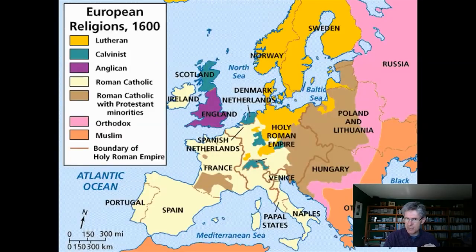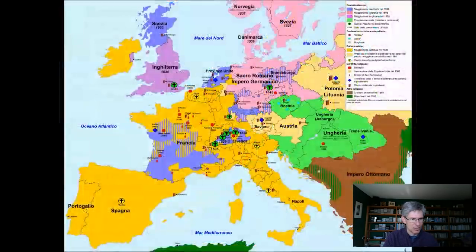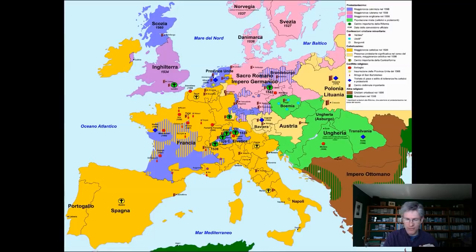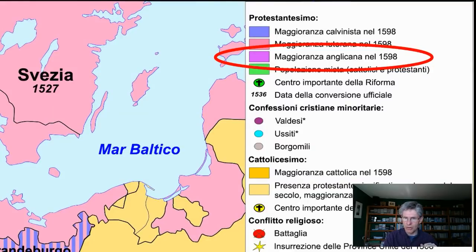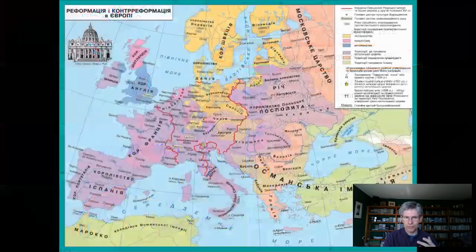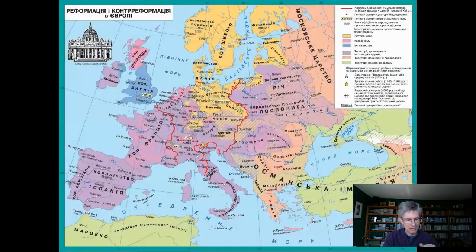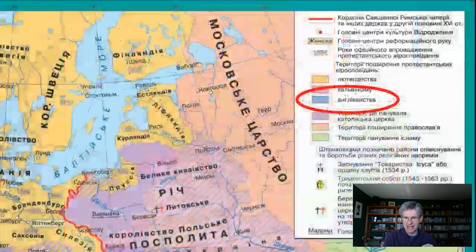And this isn't just a peculiarity of maps produced by English scholars for the English market. You might think that the Italians wouldn't have a dog in this fight in these intra-Protestant definitional quarrels. And it's true that the colour of England is more subtly different there, but the key plainly indicates that in 1598 England is majority Anglican. Even the Russians mark England out as special and describe its people as Anglicanistva.